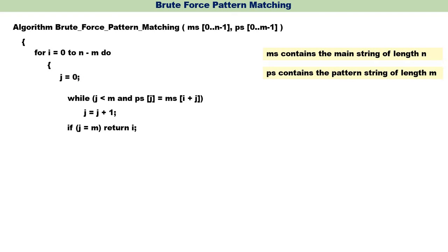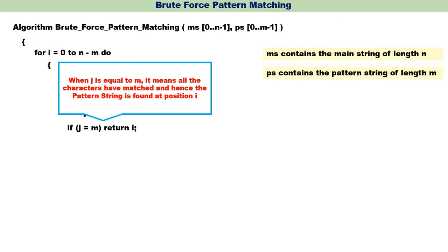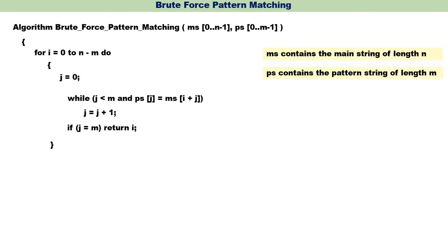While J is less than M and the character in the pattern string matches the character of the main string, the loop continues and J is incremented. If J equals M, it means all characters are matched and the pattern string is found at position I, so we return I. Otherwise, if the pattern is not found, we return minus one. That is all — a simple, straightforward brute force pattern matching algorithm. The only drawback is it takes a lot of time and effort because shifting always happens by one.